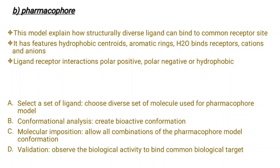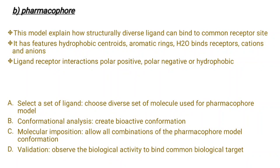The pharmacophore model explains how structurally diverse ligands can bind to a common receptor site. It has features including hydrophobic centroids, aromatic rings, H-bond binding receptors, and cations and anions. Ligand-receptor interactions can be polar positive, polar negative, or hydrophobic. The steps are: select a set of ligand or drug molecules; choose a diverse set of molecules for the pharmacophore model; perform conformational analysis to create the bioactive conformation; then molecular imposition — allow all combinations of pharmacophore model conformations between the ligand or drug molecule and the receptor. Finally, validation: observe the biological activity between the ligand or drug molecule and the receptor.